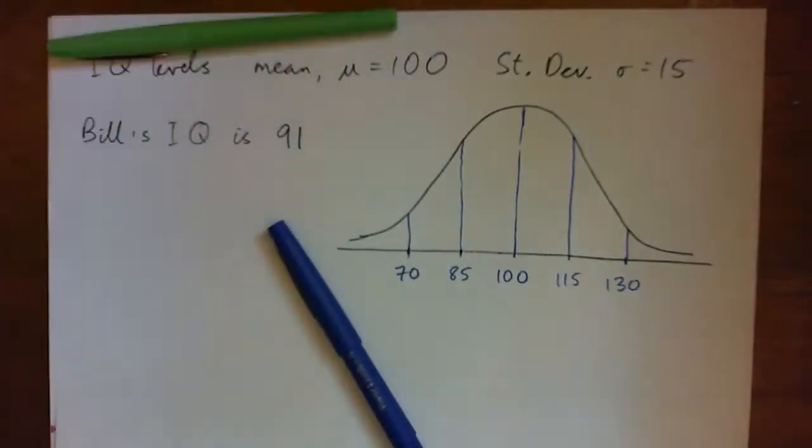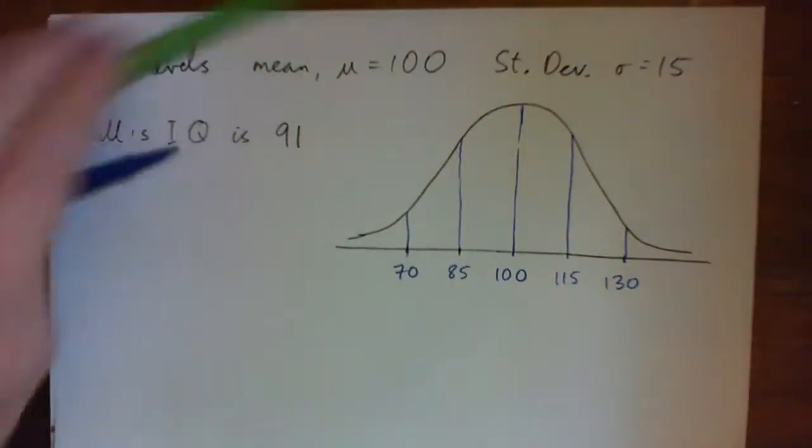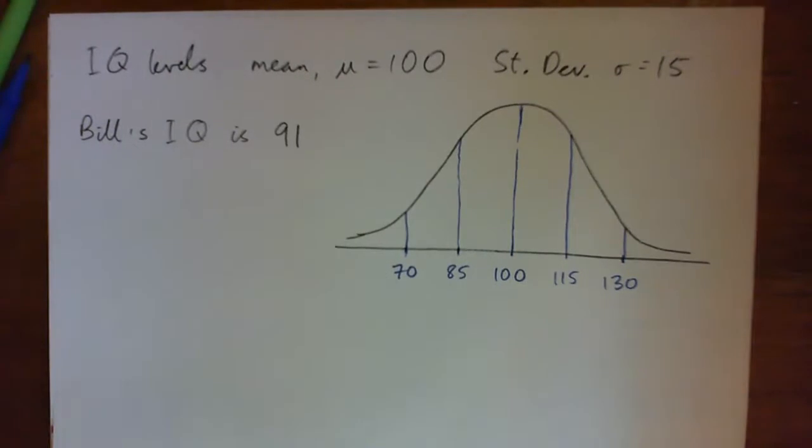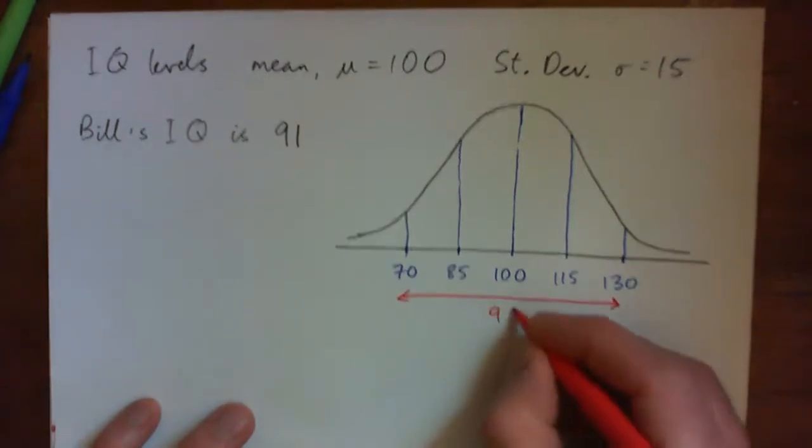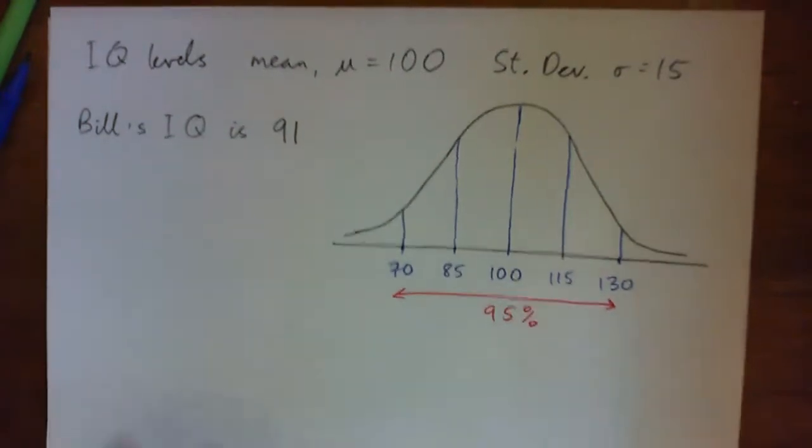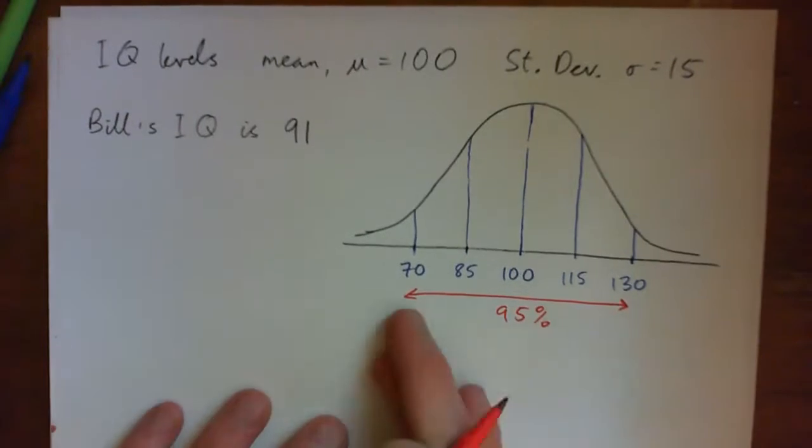And just for fun, just the most important, the most commonly used thing with normal distributions is that 95% of the population is within two standard deviations of the mean. So 95% of the population's IQ is between 70 and 130.